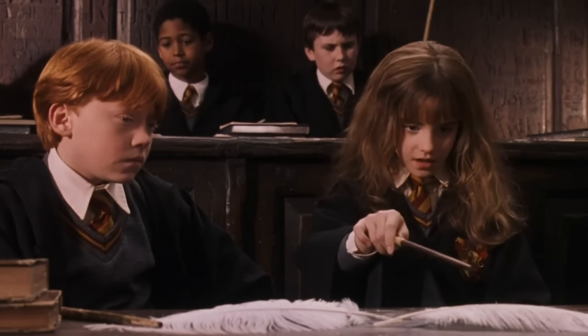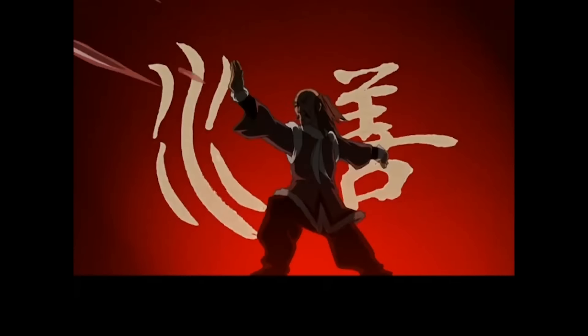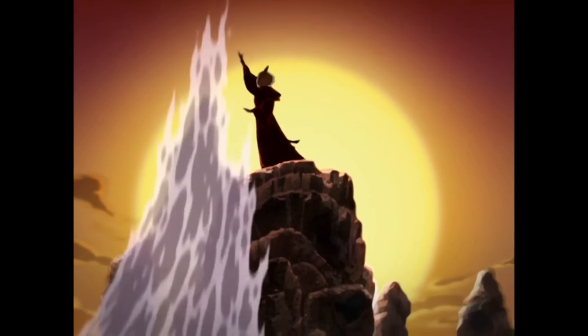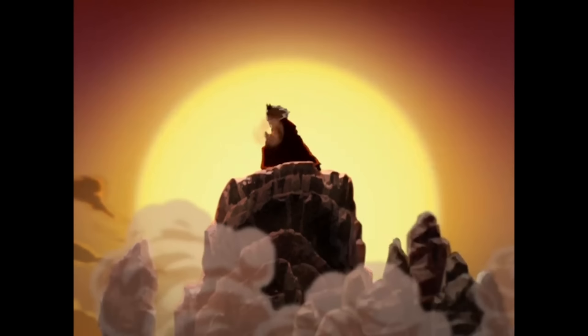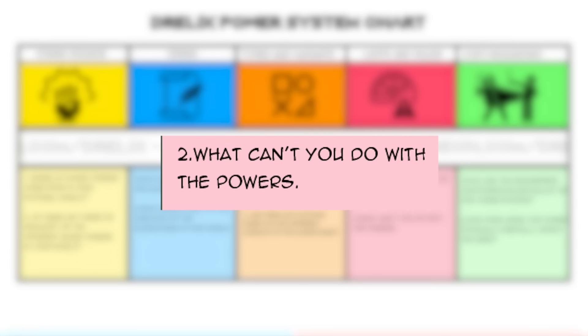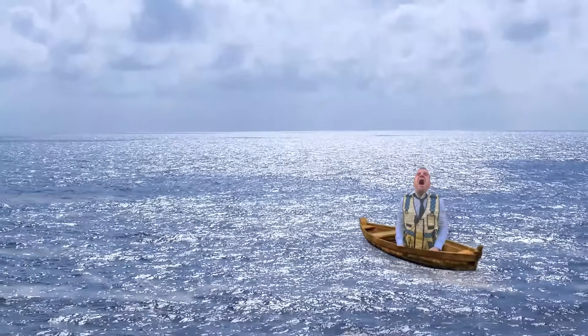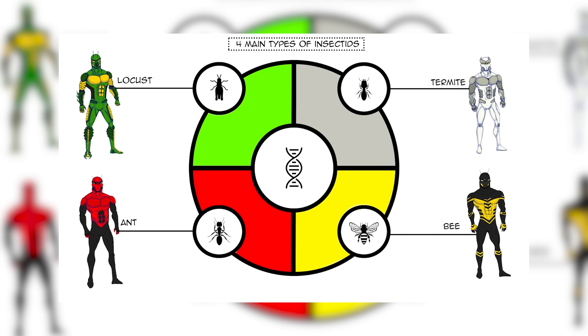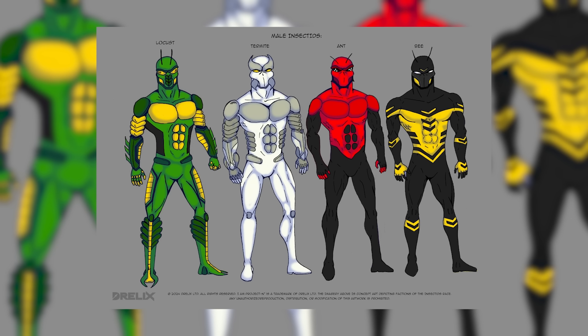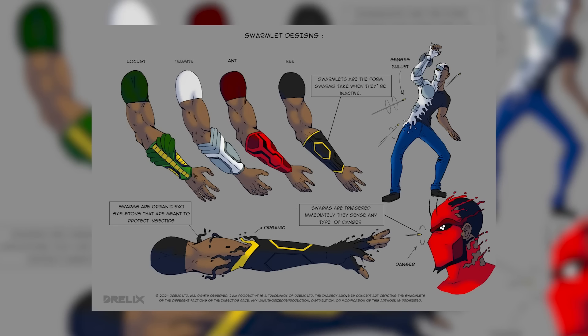Limits and rules: what are the physical or mental limits of the superpower? It tends to be more consistent when you add some kind of rules or limitations. In Harry Potter, casting spells requires precise wand movements and incantations. In Avatar you can only bend one element unless you're the Avatar. In the Project 10 universe, the different types of insectids are limited to only being able to use their own swarm. A human being or anyone not connected to a swarm directly can't just pick up a swarmlet and use it, because the swarm is directly connected to an insectid's DNA.